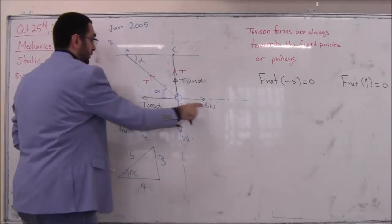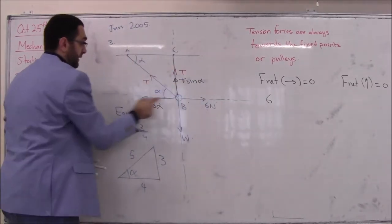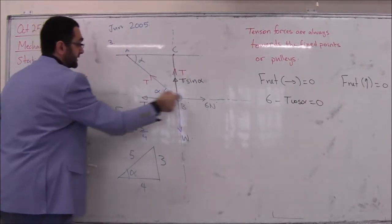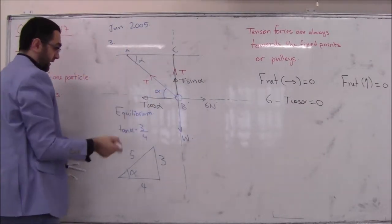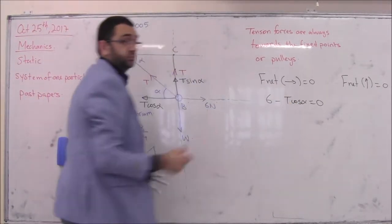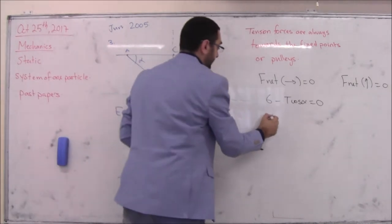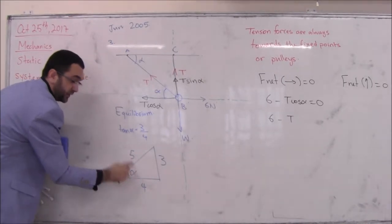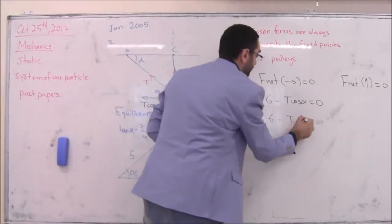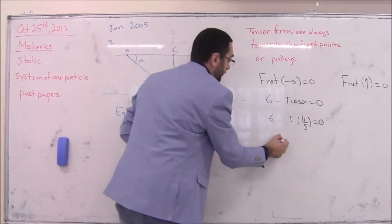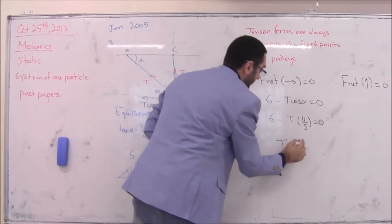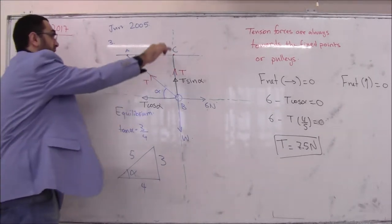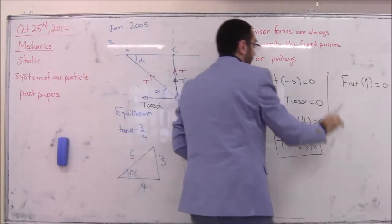For equilibrium along the horizontal axis: 60 minus T cosine alpha equals zero. Cosine alpha equals 4 over 5. Therefore T equals 60 divided by (4/5), giving T equals 75 Newtons.